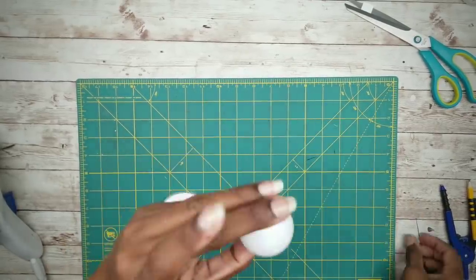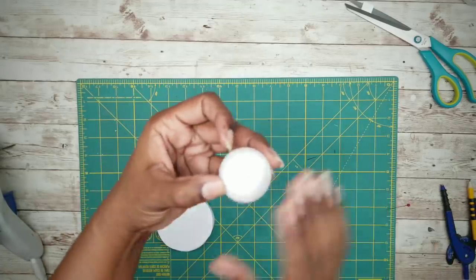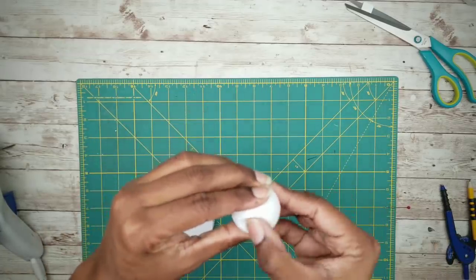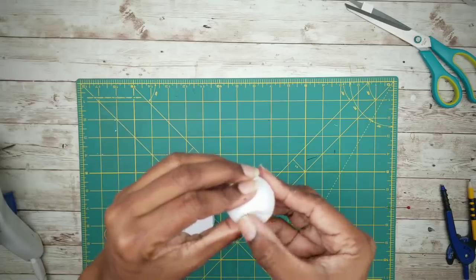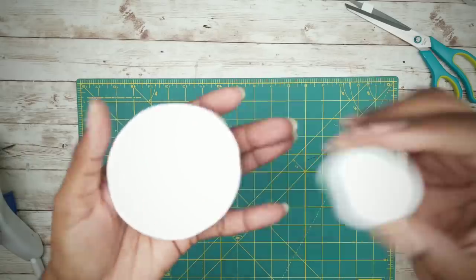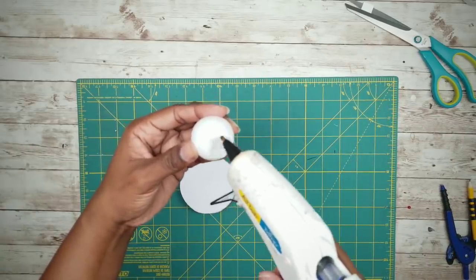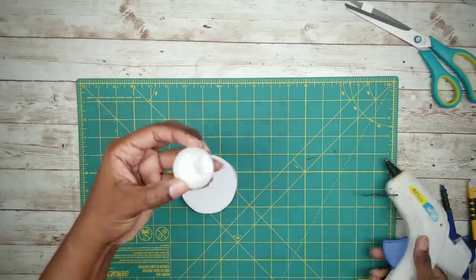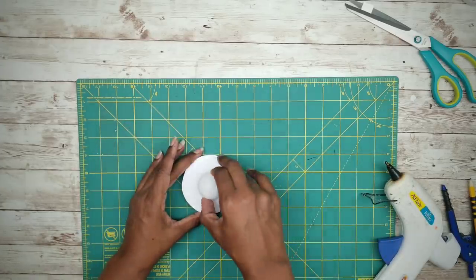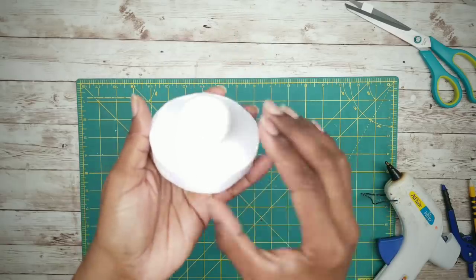We're going to grab our ping pong ball and poke a hole in the end with a straight pin so it releases the air and you can press the end in slightly with your thumb. Once that end is nice and flat, apply some hot glue to it and apply it to the center of that circle. Then we just set this to the side to dry.